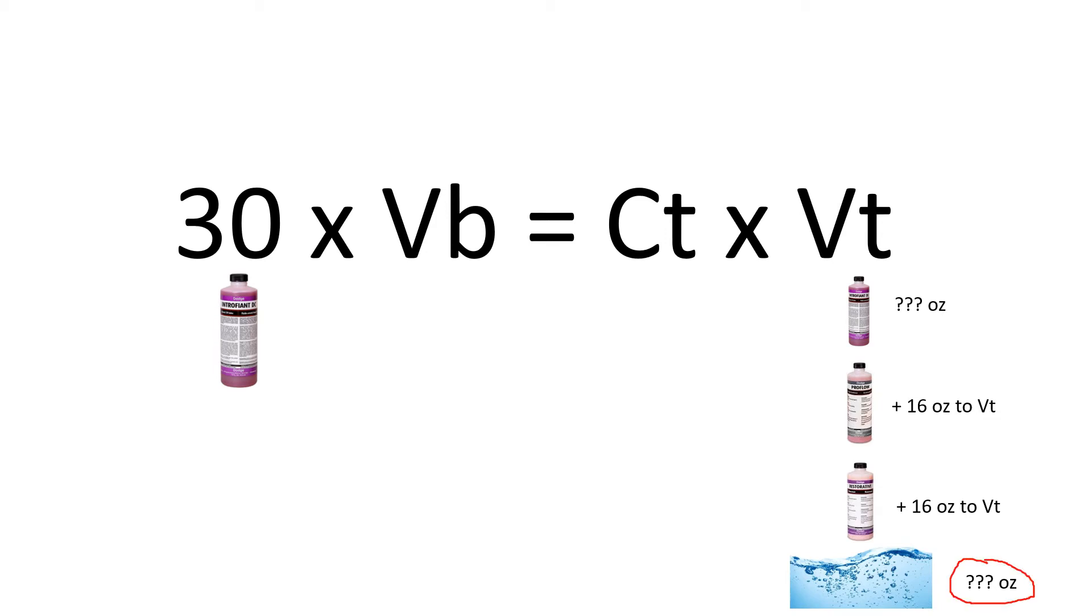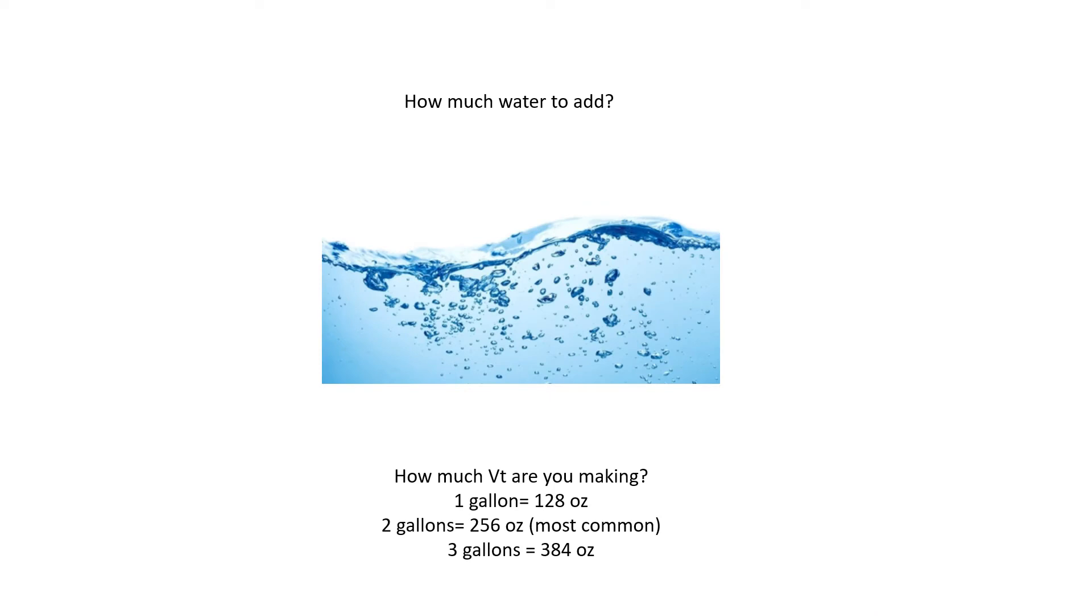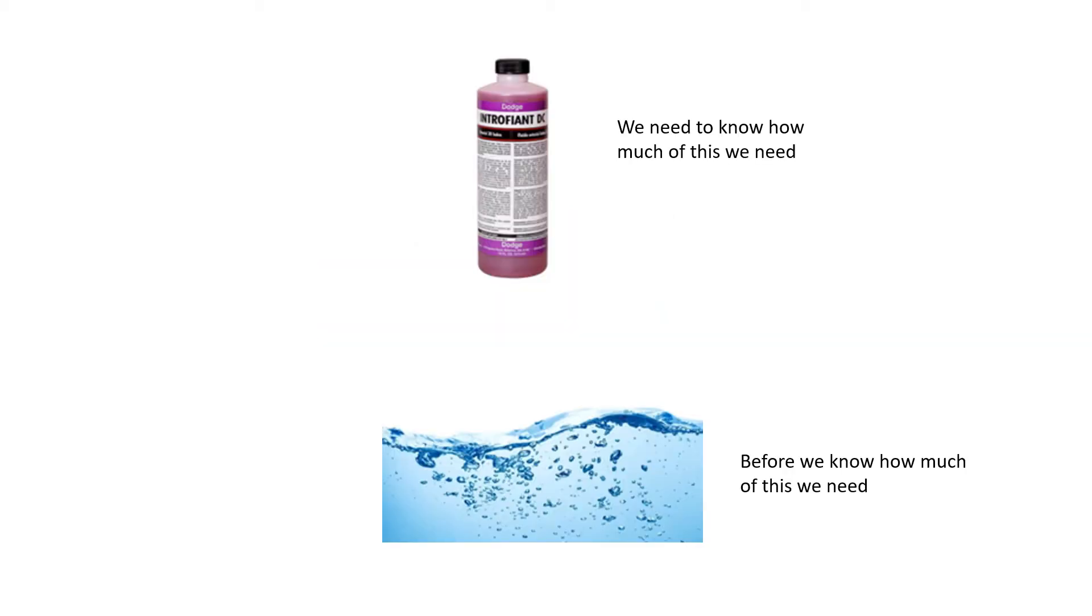So we are going to go ahead and add that to our total volume as well. However, look at this. Another question mark. We don't yet know how much water we are going to add. So what we need to do next is figure out how much of our total volume we are making. One gallon is 128 ounces. Two gallons is 256 ounces, probably the most common mix. And three gallons, 384 ounces, will fill up your tank.